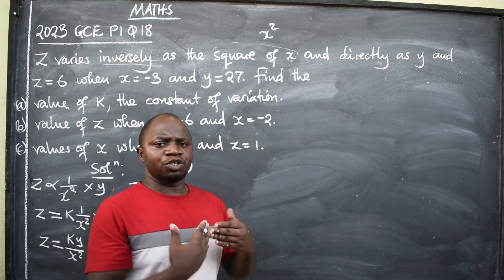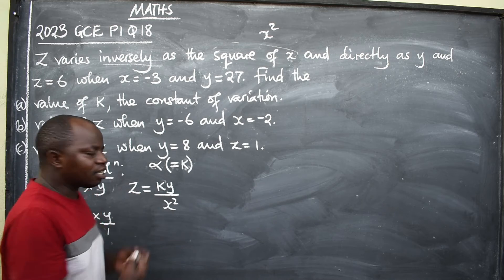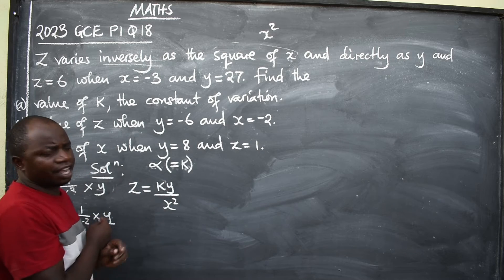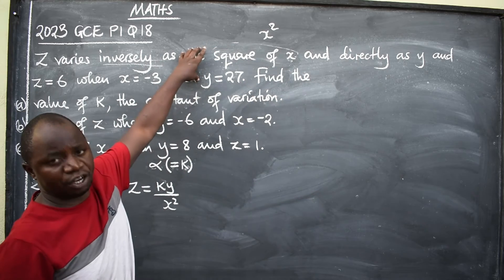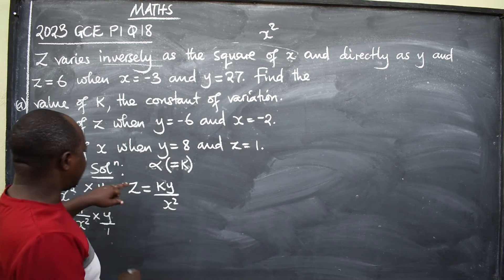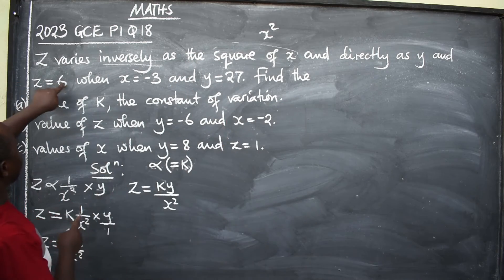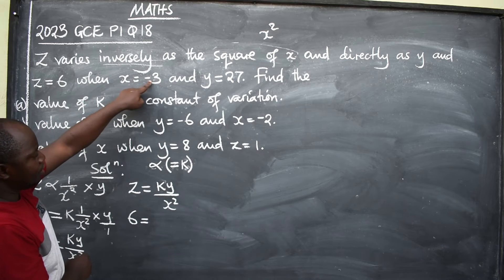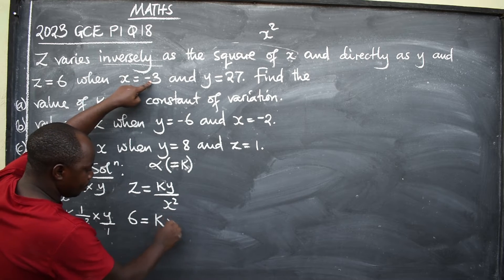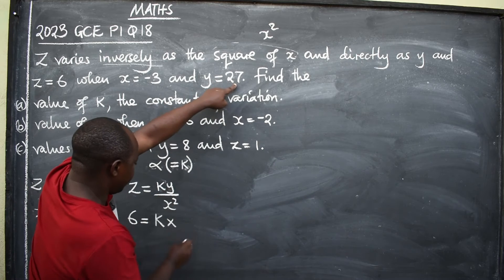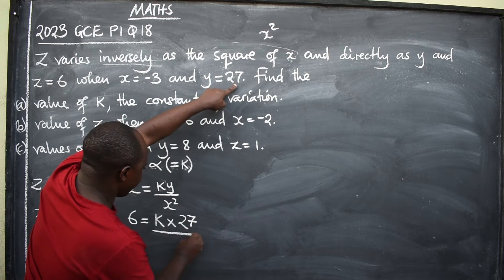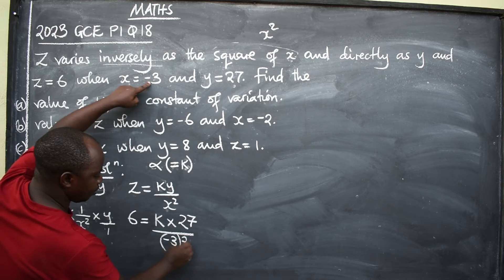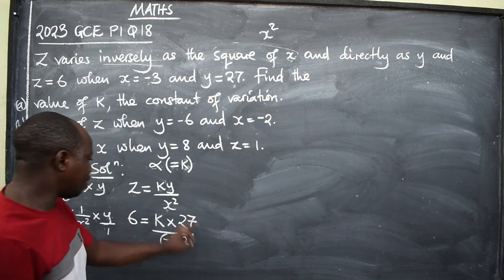The first step is to find the value of K, the constant of variation. We use the values given and substitute into the equation. Z is equal to 6, X is equal to negative 3, and Y is equal to 27. So we write: 6 equals K times 27 over negative 3 squared.